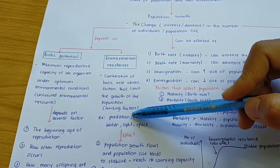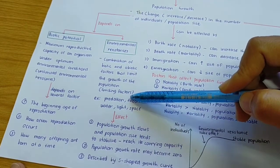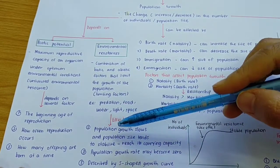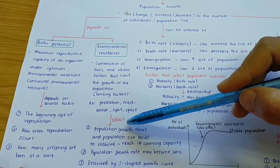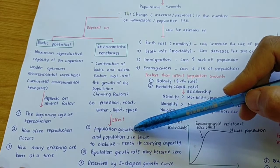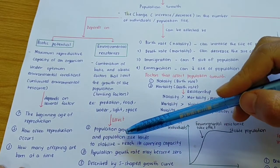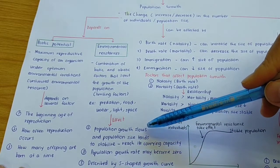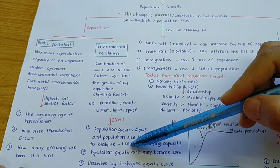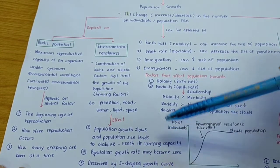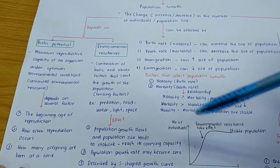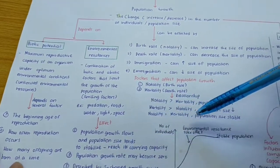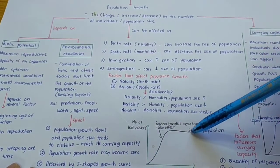Environmental resistance is essentially a limiting factor. The effects of environmental resistance are: population growth slows down and population size tends to stabilize, reaching what we call carrying capacity. The population growth rate may become zero, meaning the population will be stable. This is described by the S-shaped growth curve, also called the sigmoid growth curve.